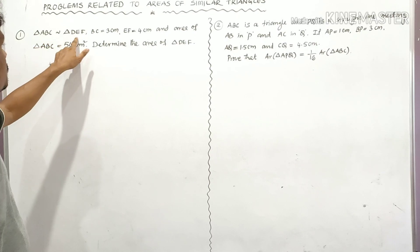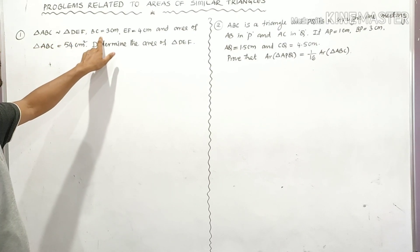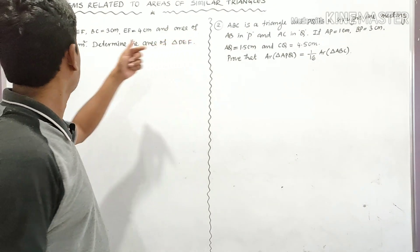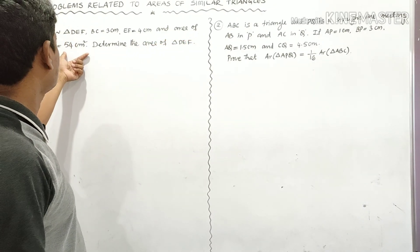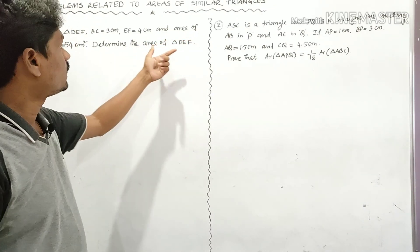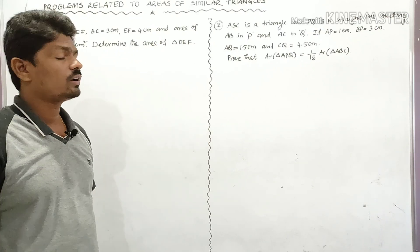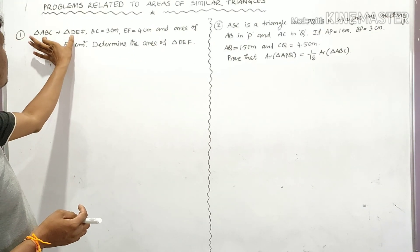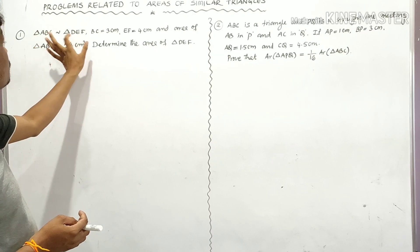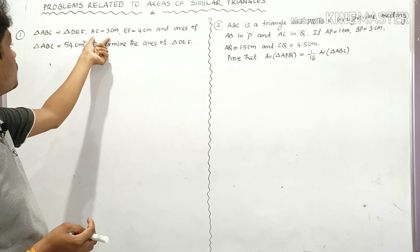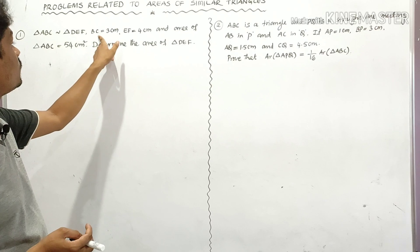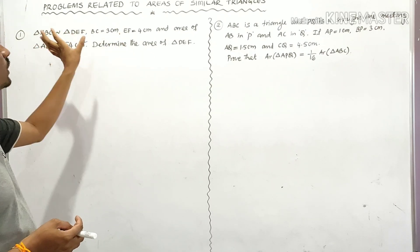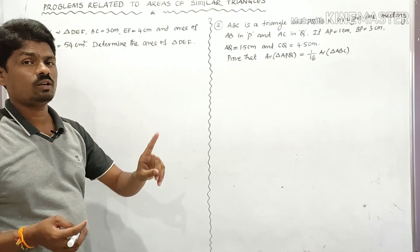The first problem: triangle ABC is similar to triangle DEF. BC is equal to 3 centimeters, EF is equal to 4 centimeters, and the area of triangle ABC is equal to 54 centimeter square. Determine the area of triangle DEF. Triangle ABC is similar to triangle DEF, so BC and EF are the corresponding sides of these two triangles, and we have to use the first statement.